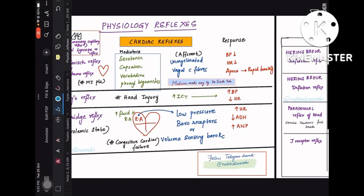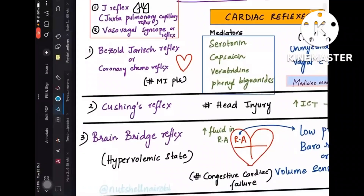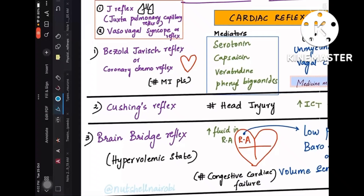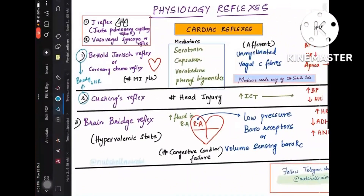There are three cardiac reflexes to know: the first is the Bezold-Jarisch reflex (also called the coronary chemo reflex), the second is Cushing's reflex, and the third is Bainbridge reflex. The first two cardiac reflexes are bradycardic, meaning both produce decreased heart rate.